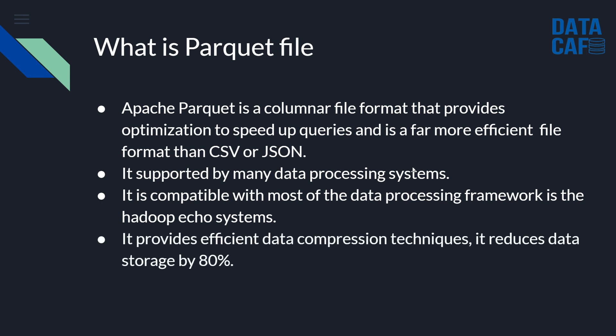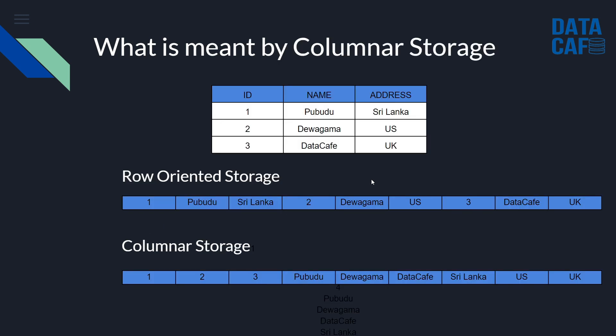Parquet has advanced compression techniques that reduce data storage by 80%. For example, if we have a 10 GB CSV file, we can store the same information as a Parquet file using only 2 GB — an 80% reduction in storage. That is the introduction to Parquet files.